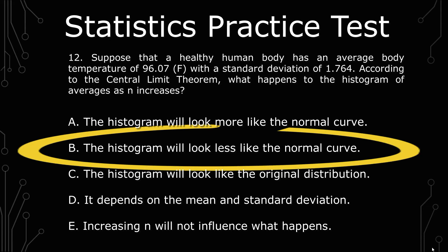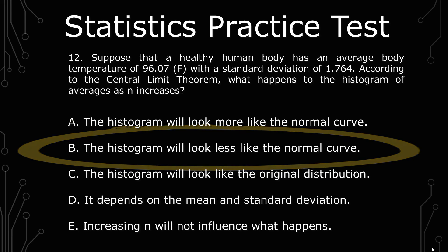For B, the histogram will look less like the normal curve. That is the complete opposite of what the central limit theorem states.